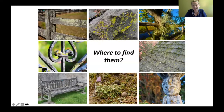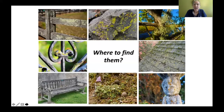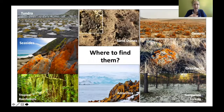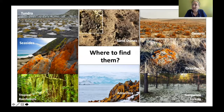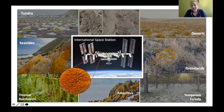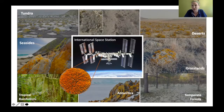Lichen can be found in many different places: on fence rows, rocks, benches, the ground, trees, and even our roofs. They inhabit many different habitats — the tundra, seasides, tropical rainforests, temperate forests, Antarctica, sand dunes, deserts, and prairies. One type of lichen was even brought to the International Space Station and was able to survive in space for a fair amount of time.